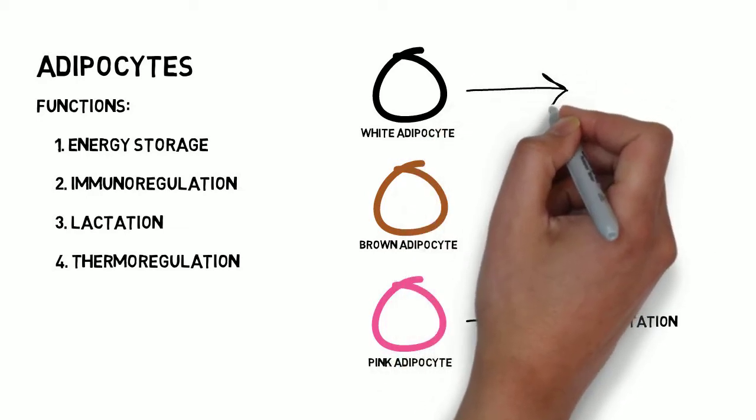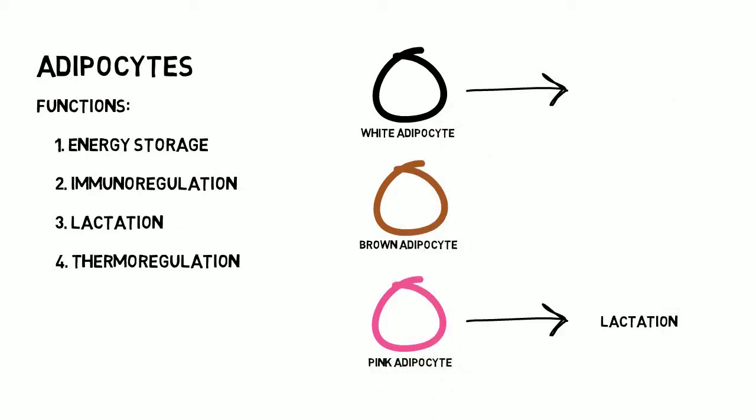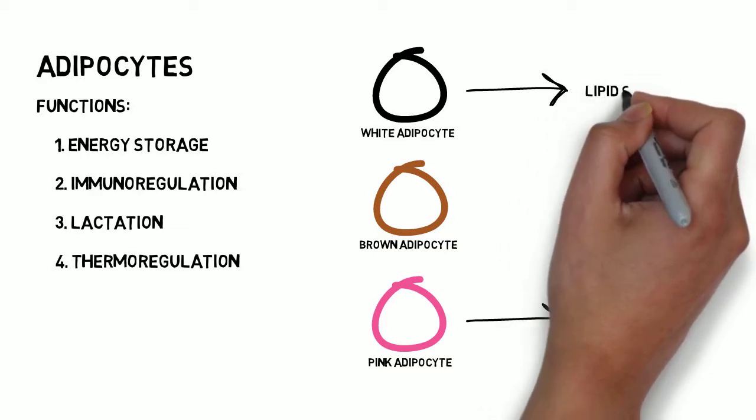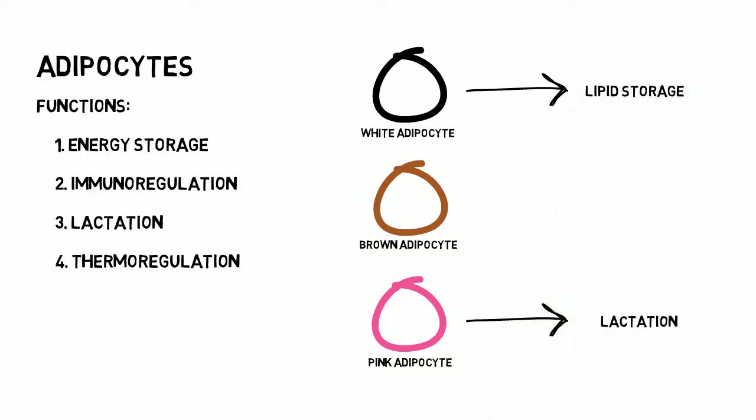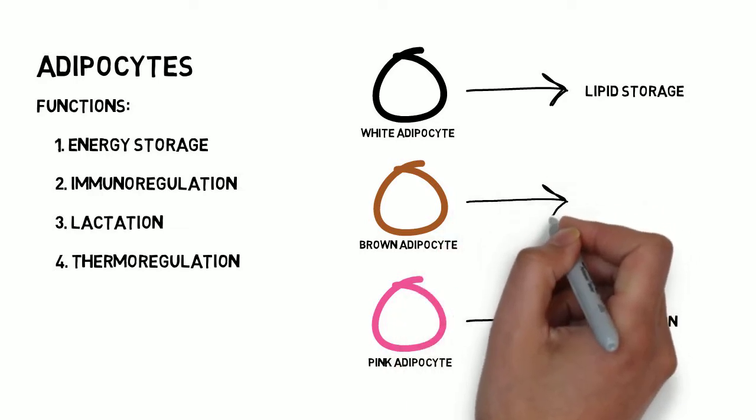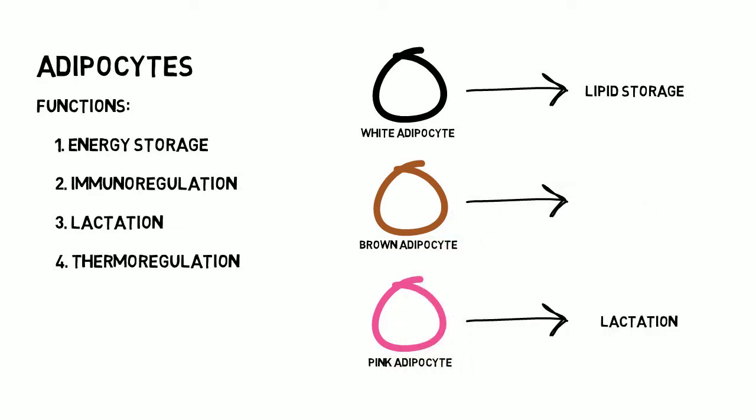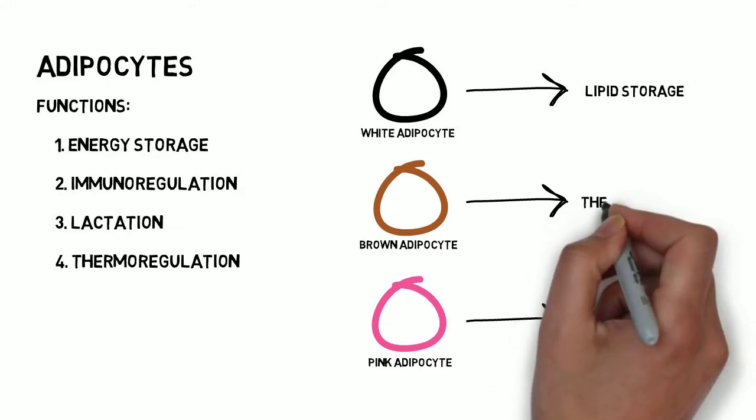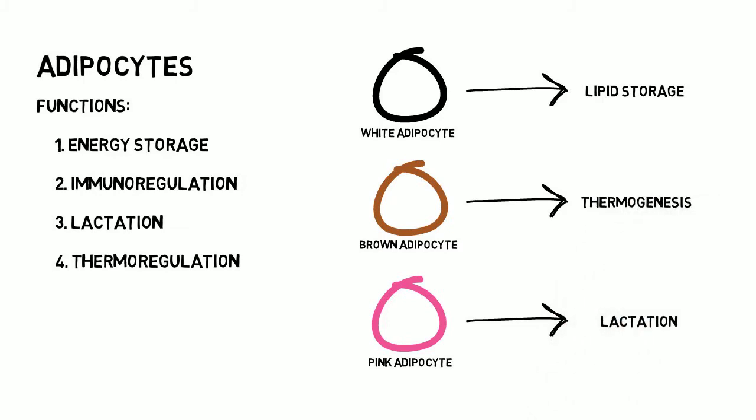White adipocytes are responsible for that extra padding that's protecting that six-pack. It is responsible for lipid storage, ensuring there is enough energy to supply metabolic demand. The brown adipocytes do the hard work. These cells contain a large amount of mitochondria, which are responsible for using lipids for thermogenesis. This means that they generate energy in the form of heat, causing these cells to be important in thermoregulation.